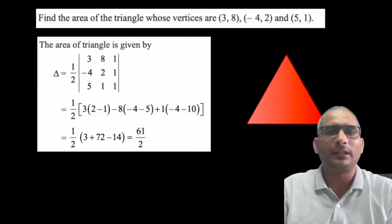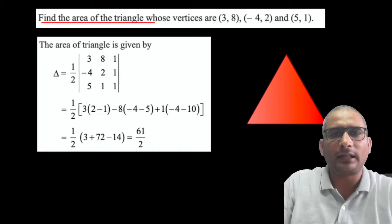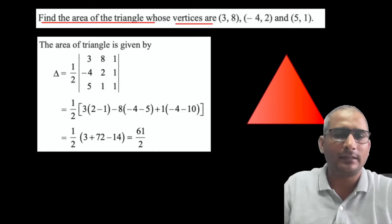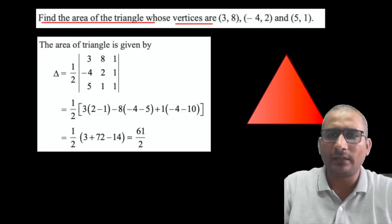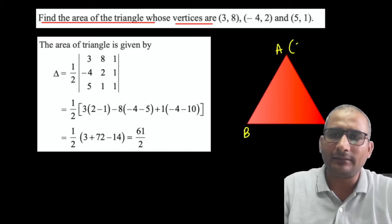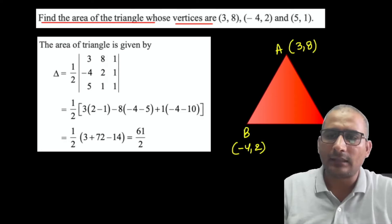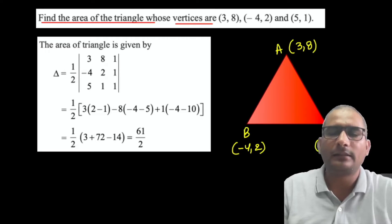Let me explain this with the help of an example. Find the area of the triangle whose vertices are given. Suppose triangle ABC has vertices: A is (3, 8), B is (-4, 2), and C is (5, 1). So x1 = 3, y1 = 8; x2 = -4, y2 = 2; x3 = 5, y3 = 1.